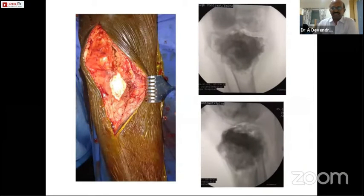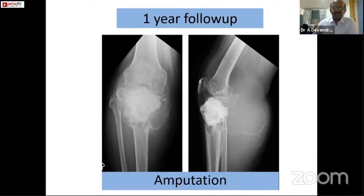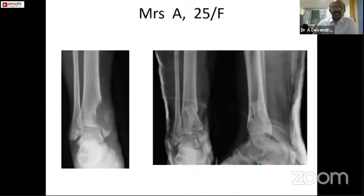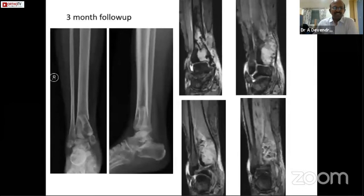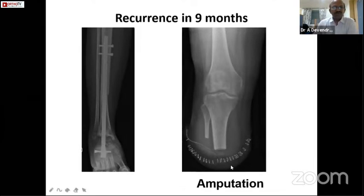The immediate post-op x-ray looked satisfactory, however the patient went on to have recurrence within a one-year duration. In this situation, where the proximal fibula cannot be salvaged, amputation is the best choice to save the life of the patient. There is also a 25-year-old lady who presented with distal fibula Giant Cell Tumor — initially curetted and treated with allografts and iliac crest grafts combined, however the patient presented within three months with recurrence. En-bloc resection of the distal fibula was then performed using distal fibula allografts, however the patient showed recurrence within nine months, and hence a below-knee amputation was performed.